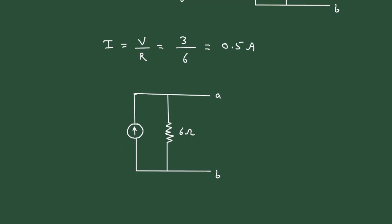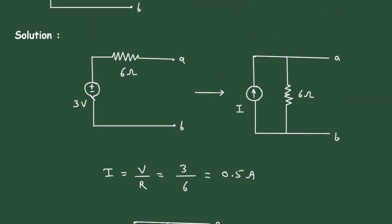So this current will be 0.5 Ampere. This is the equivalent current source for this voltage source.